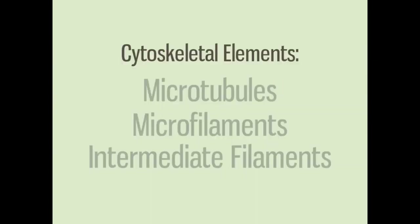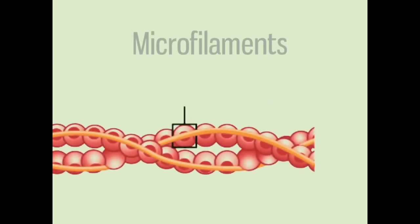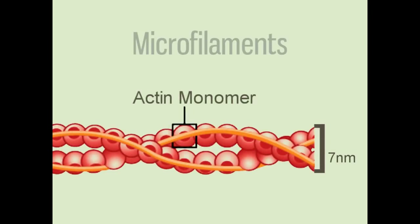The second major type of cytoskeletal structures are called microfilaments. The smallest kind, they are composed of two intertwined strands of actin polymers, each made up of many individual actin monomers. Like all cytoskeletal elements, they help to maintain cell shape, but microfilaments are also key to changing cell shape.